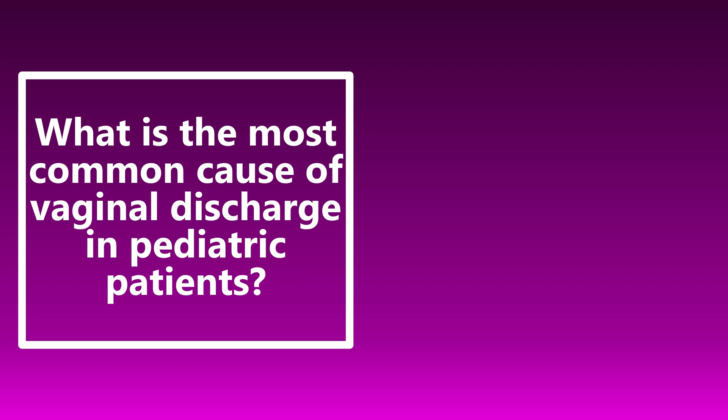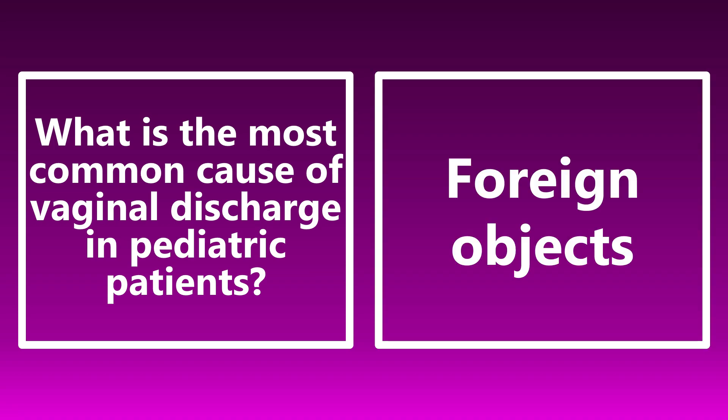The most common cause of vaginal discharge in pediatric patients is actually foreign objects — kids are curious and may insert things they shouldn't. This is similar to children with purulent nasal discharge, where one of the first things to rule out is a foreign object, as it could be the cause of all their symptoms.